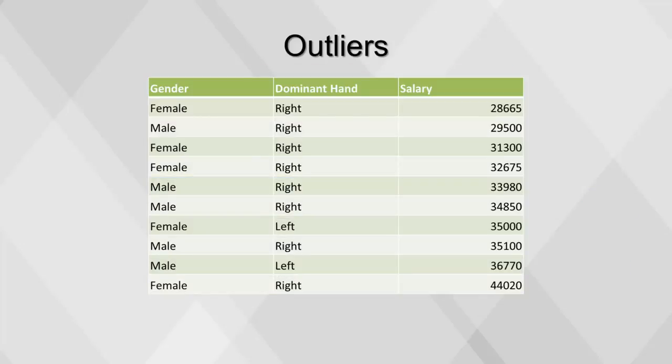Values that fall outside of the normal range of the rest of the observations are called outliers. In our example, the value of $44,020 is an outlier from the rest of the values.